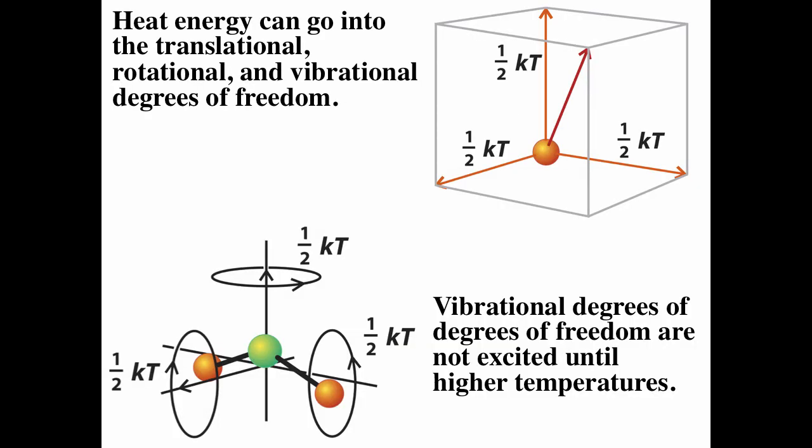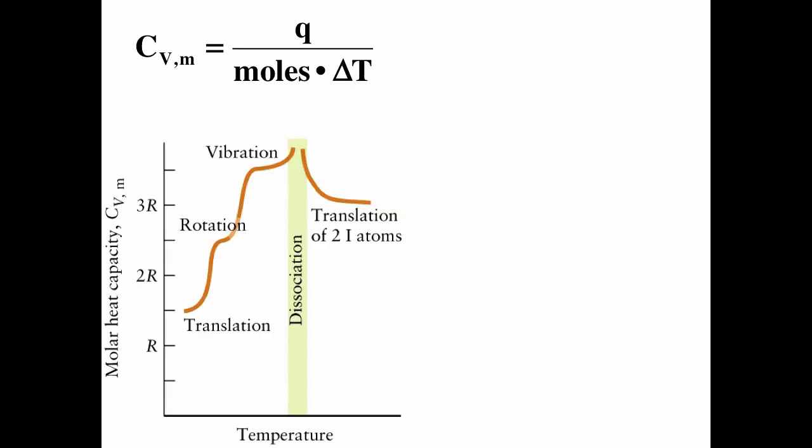Heat can go into translational, rotational, and vibrational degrees of freedom. At low temperatures, heat goes only into translation. As temperature rises, heat goes into translation and rotation. Heat only goes into vibrational degrees of freedom at high temperatures because the spacing between vibrational states is much larger. The molar heat capacity vs. temperature graph for I₂ shows this: initially only translation, then rotation increases the heat capacity, and at high enough temperature vibration contributes. At very high temperatures, I₂ dissociates into two iodine atoms, and you see only translational contributions — twice the initial value since there are now twice as many atoms.